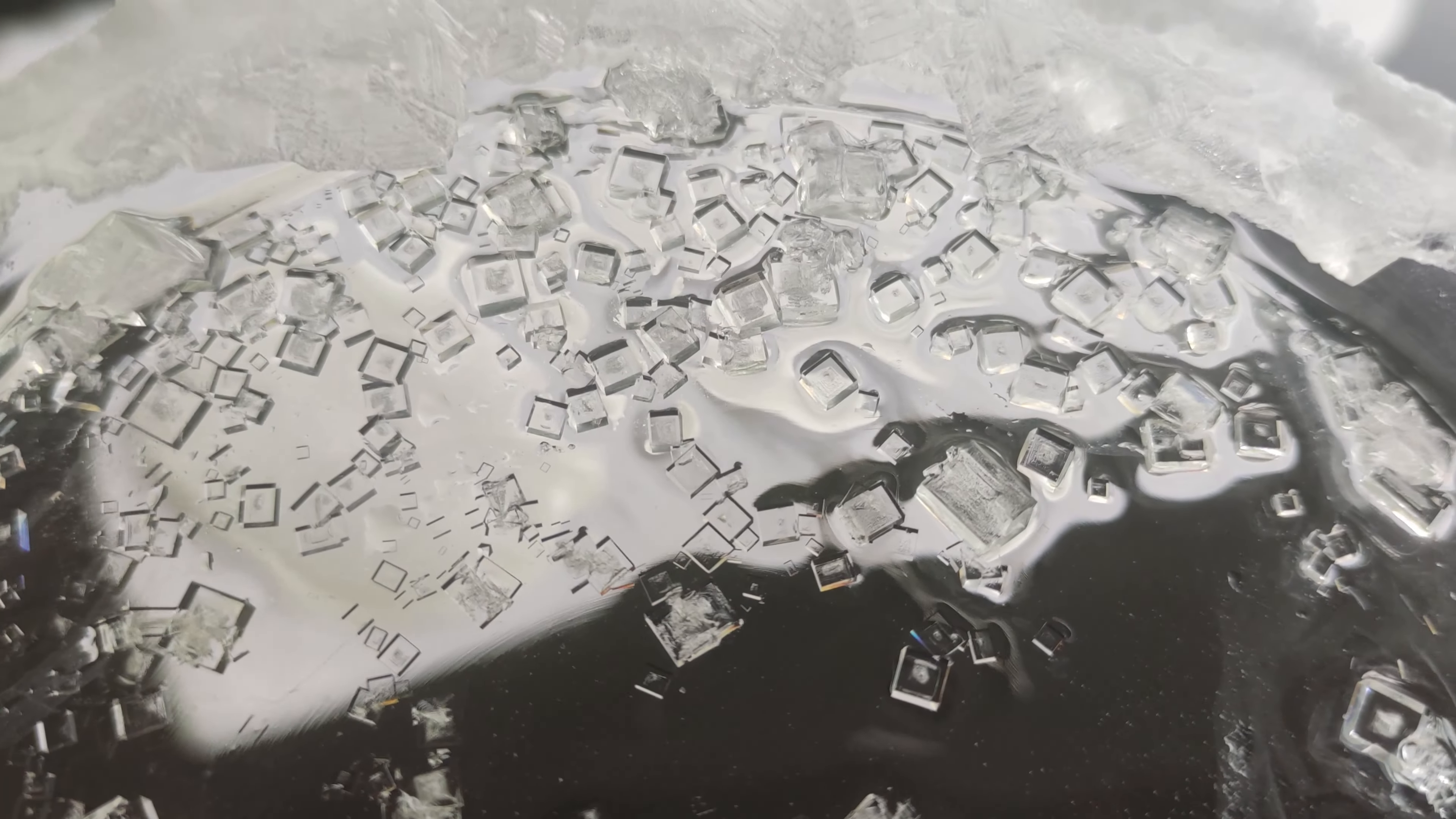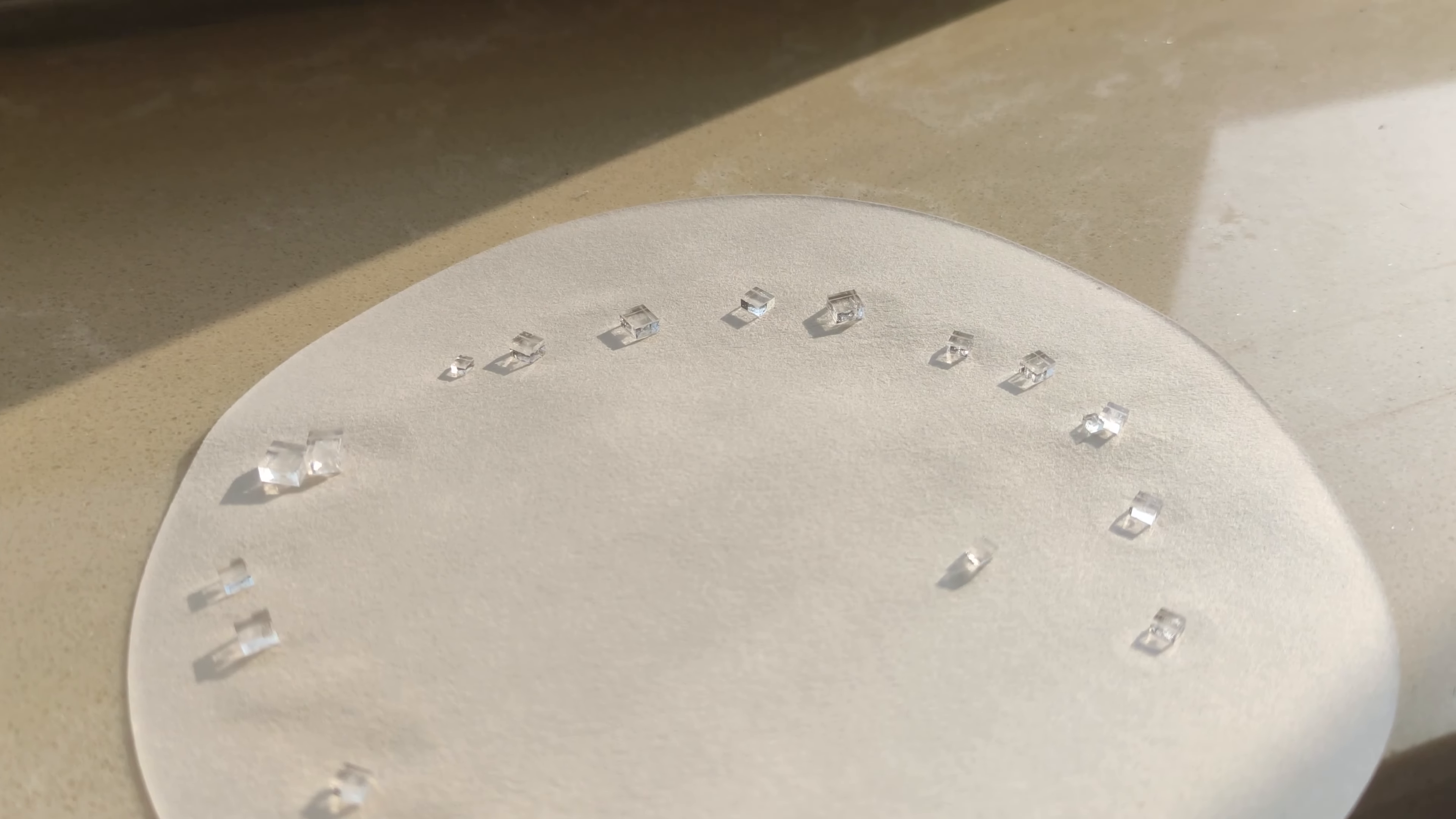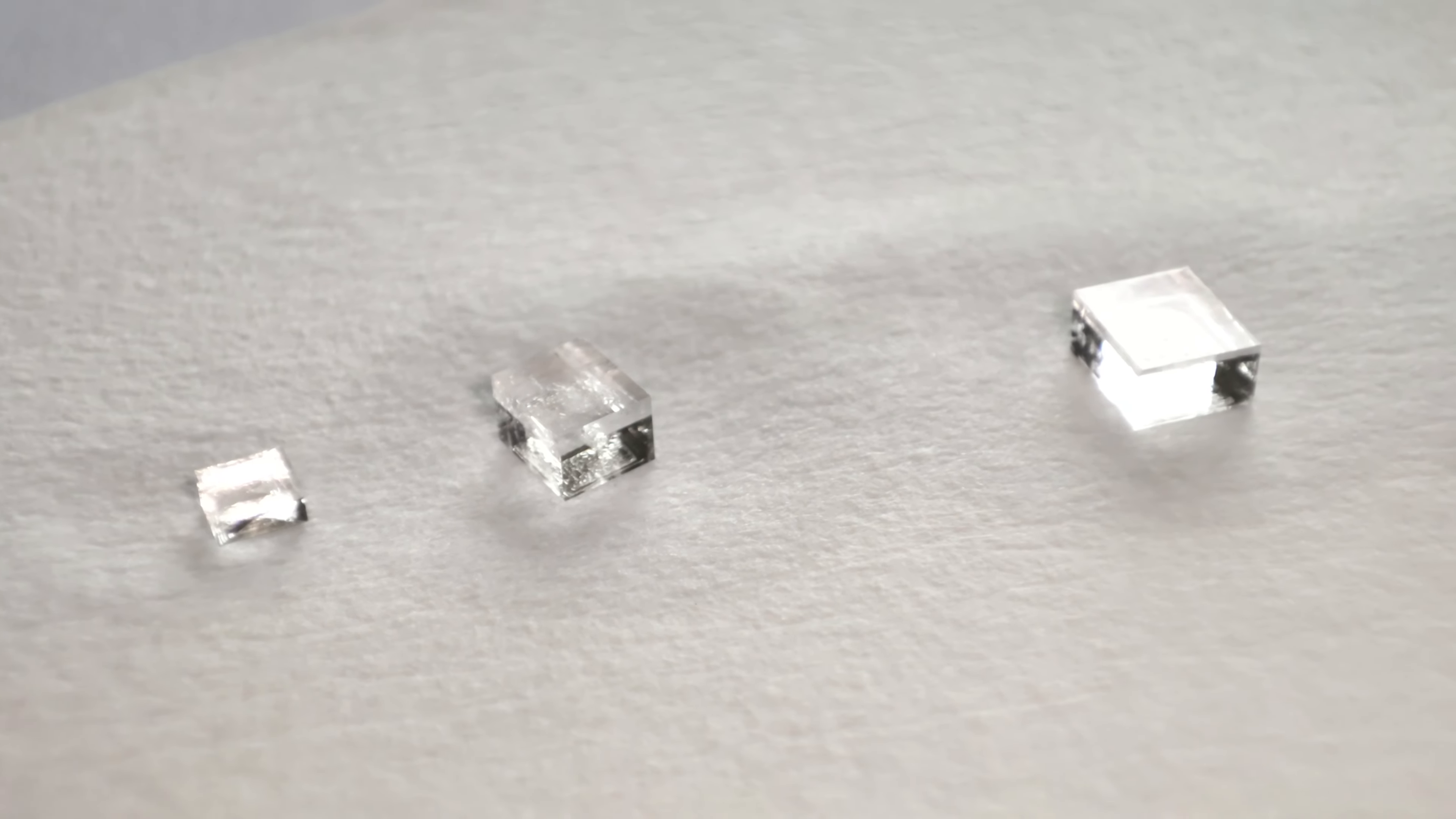Ah, the secret ingredient. Toss in some glycine while making the saturated solution, and voila. Those sodium chloride crystals will be so clear, they'll put diamonds to shame. Crystal clarity, here we come.